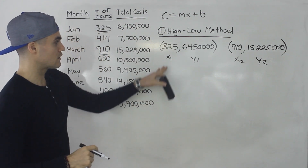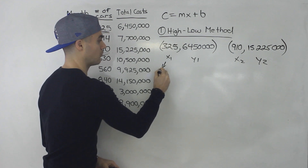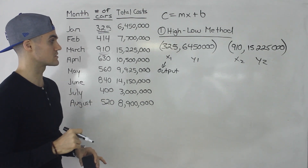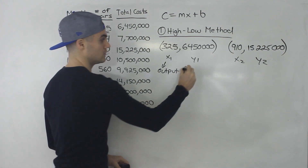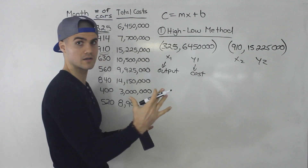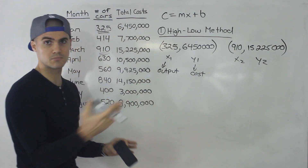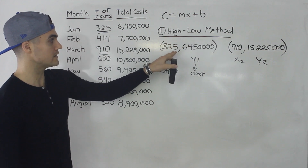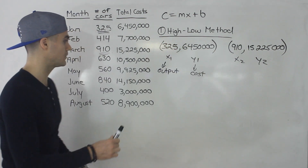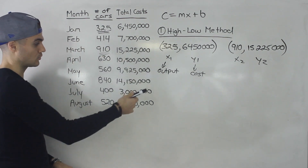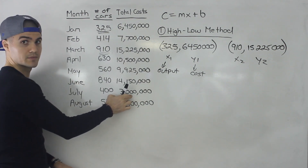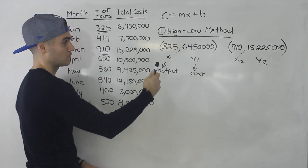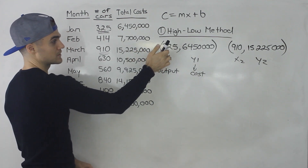The x value is always going to be the output — the number of units, in this case cars. The y value always represents the respective total costs for that output, which is a mix of fixed costs and variable costs. An important thing: the high-low always corresponds to the output, not the cost. Notice we didn't take the highest cost or lowest cost — the lowest cost would be 3 million, but it wasn't the lowest output.